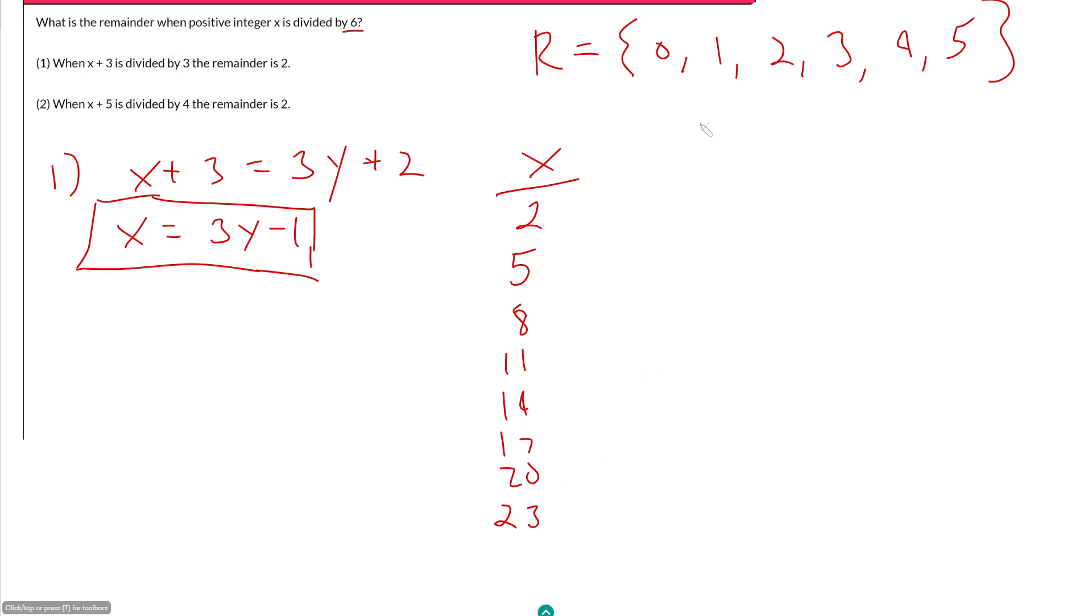So if we want to know what the remainder is when we divide by 6, let's see what we get. 2 divided by 6 would be 0 remainder 2. 5 divided by 6 would be 0 remainder 5. 8 would be 1 remainder 2. And so it looks like we have a pattern here, alternating between 2s and 5s.